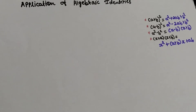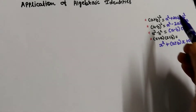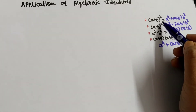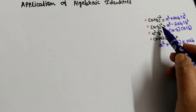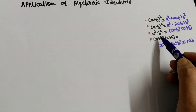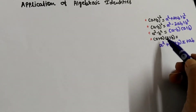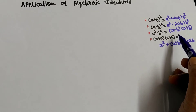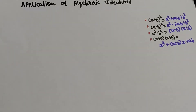These identities give an alternative method of multiplying binomials or numbers. In the first two identities, (a + b)² and (a - b)², a binomial is multiplied with the same binomial. While in the other two identities, a² - b² and (x + a)(x + b), a binomial is multiplied with a different binomial.